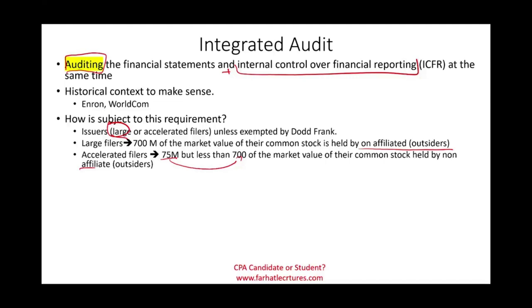Simply put, if the company is small, it will be exempt in terms of revenue. Just know that certain publicly traded company issuers are exempt. Also, non-issuers could have an integrated audit, but bear in mind they are not required to. The integrated audit is an option — maybe management wants it, maybe the owners, maybe a lender or bank wants to make sure internal control is working properly, or maybe a potential investor who says, 'I will invest in you, but first I want an integrated audit.'